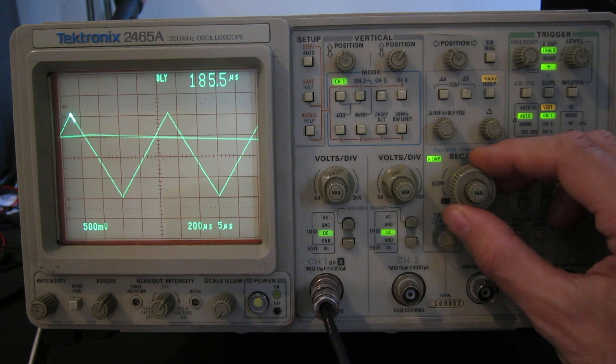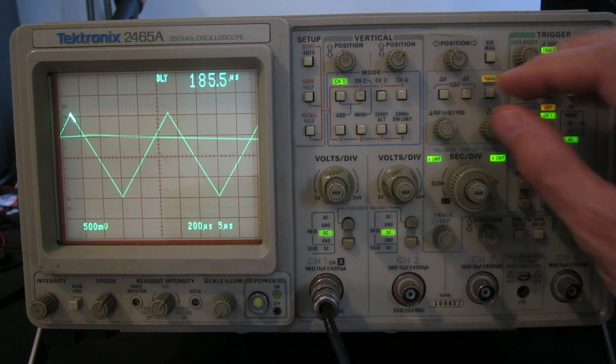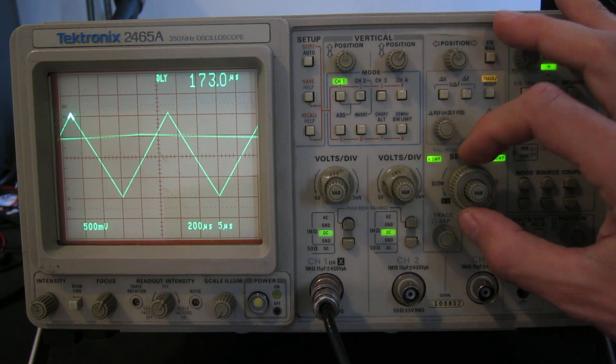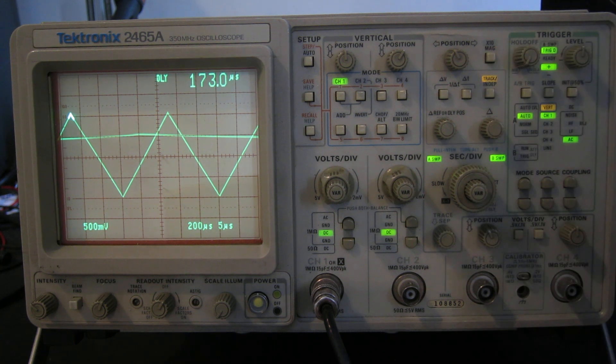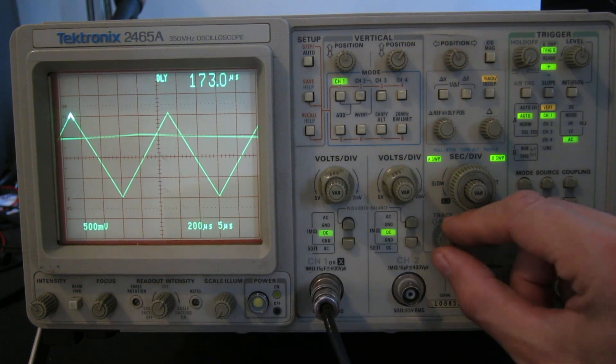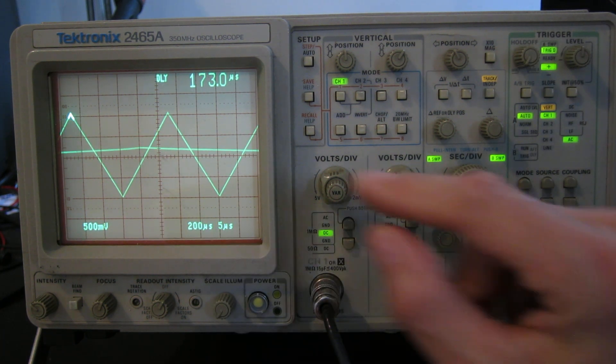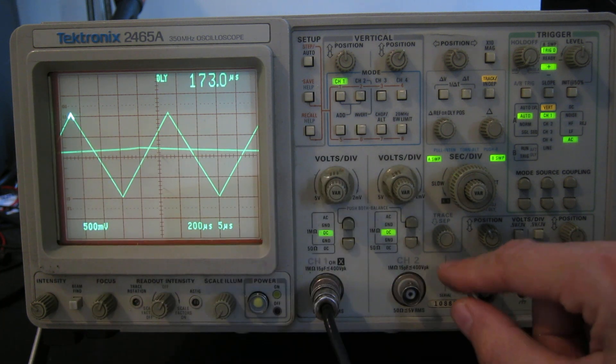There we go. We're selecting the speed of the second time base now. There we go. Let's have it about there. And push the knob. Well, we'll keep it out and we can see it. You can see that we have a zoomed in view of that little peak on the waveform.